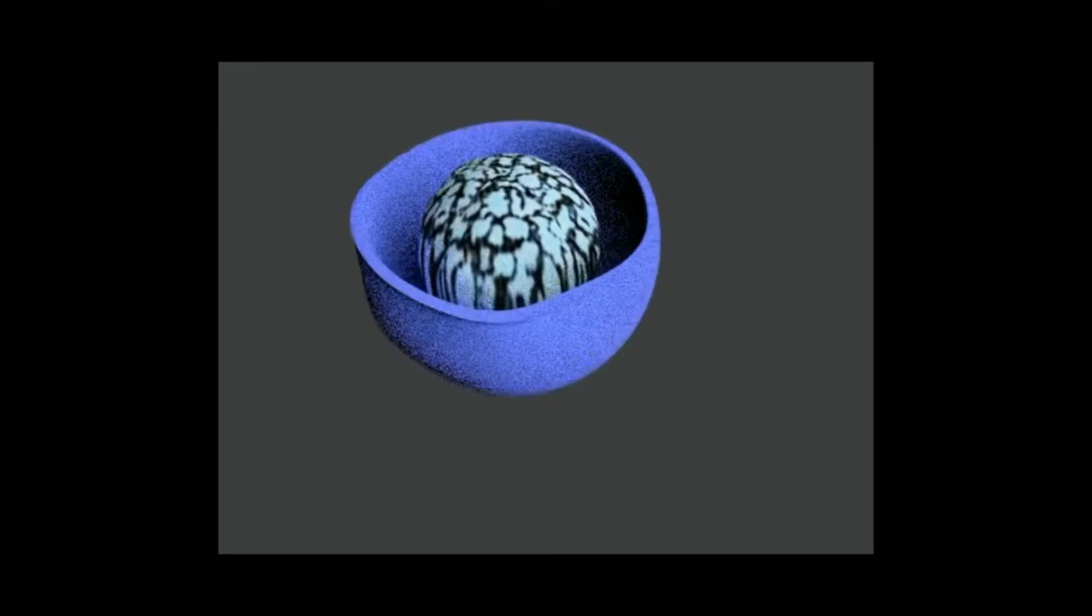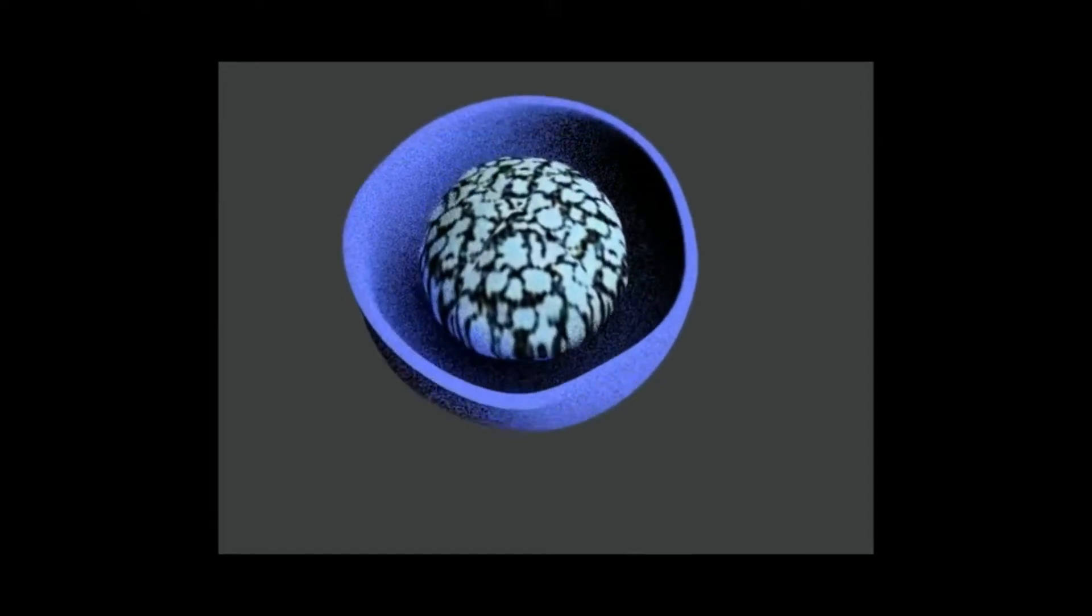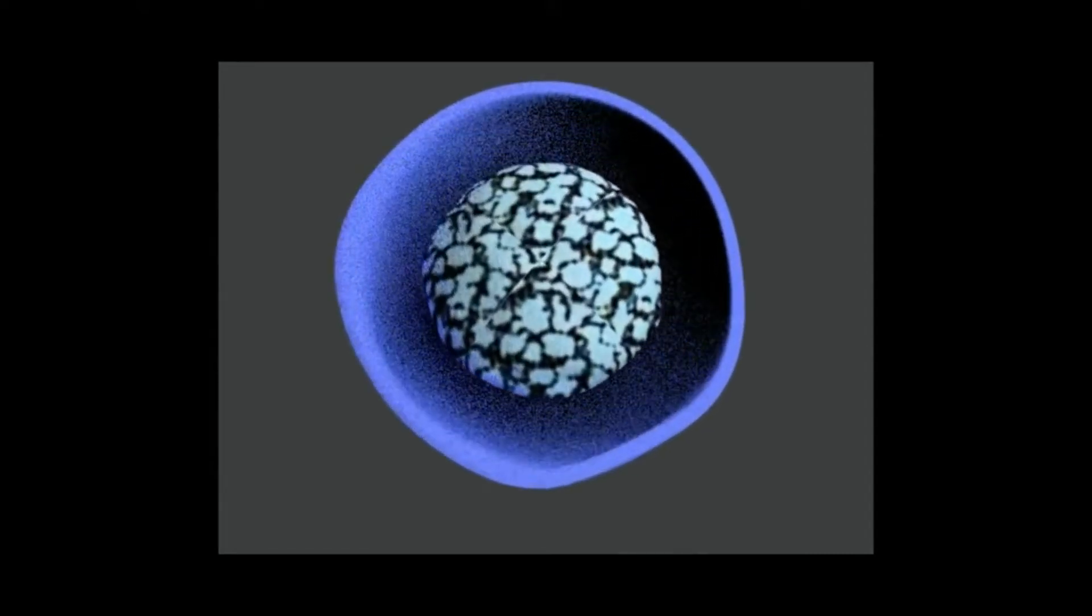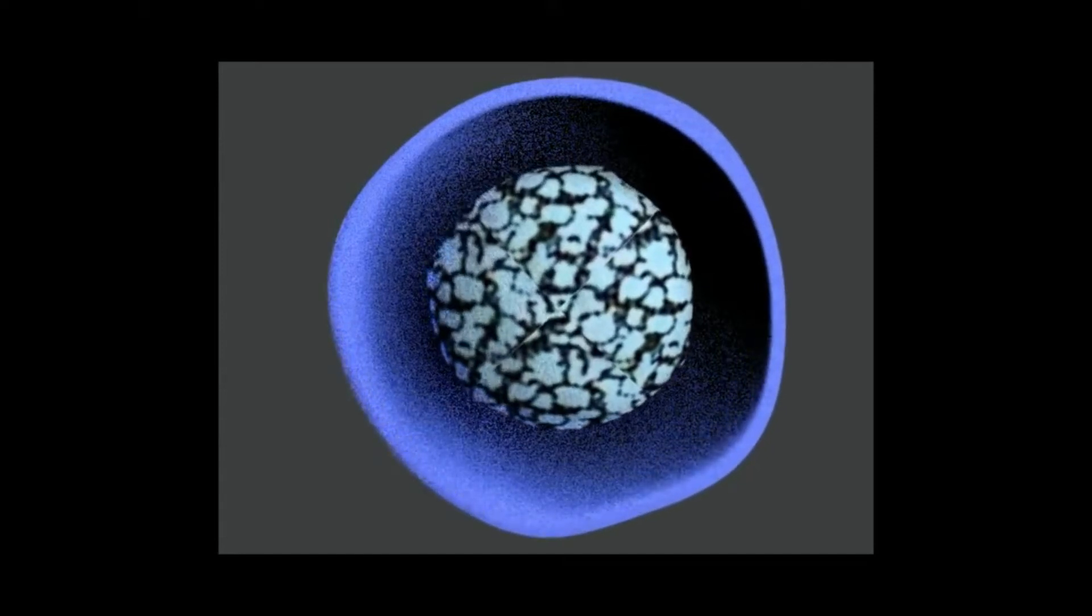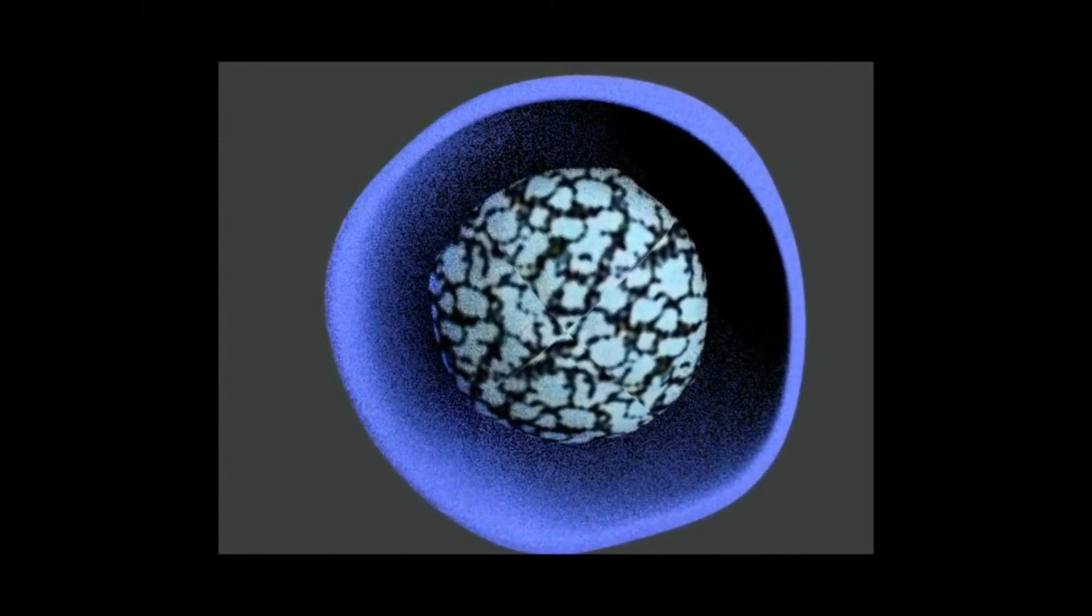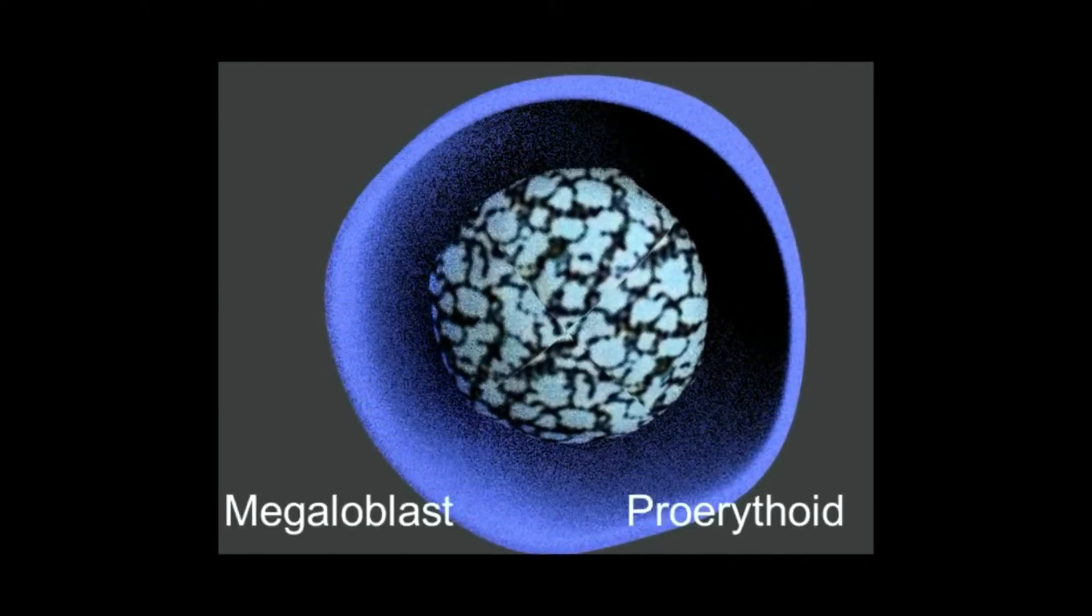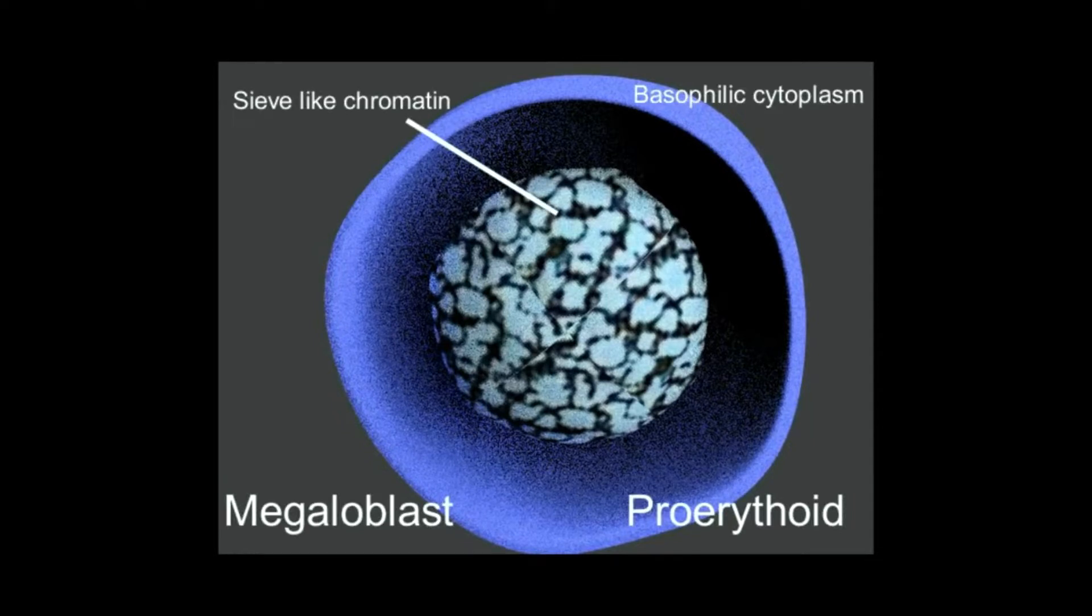Now, in case of megaloblastic anemia, the red cell precursor of same stage shows similar cytoplasmic basophilia but an immature nucleus evident as relatively larger size and more open sieve-like or condensed chromatin due to impaired DNA synthesis. This is a megaloblast at pro-erythroid stage.